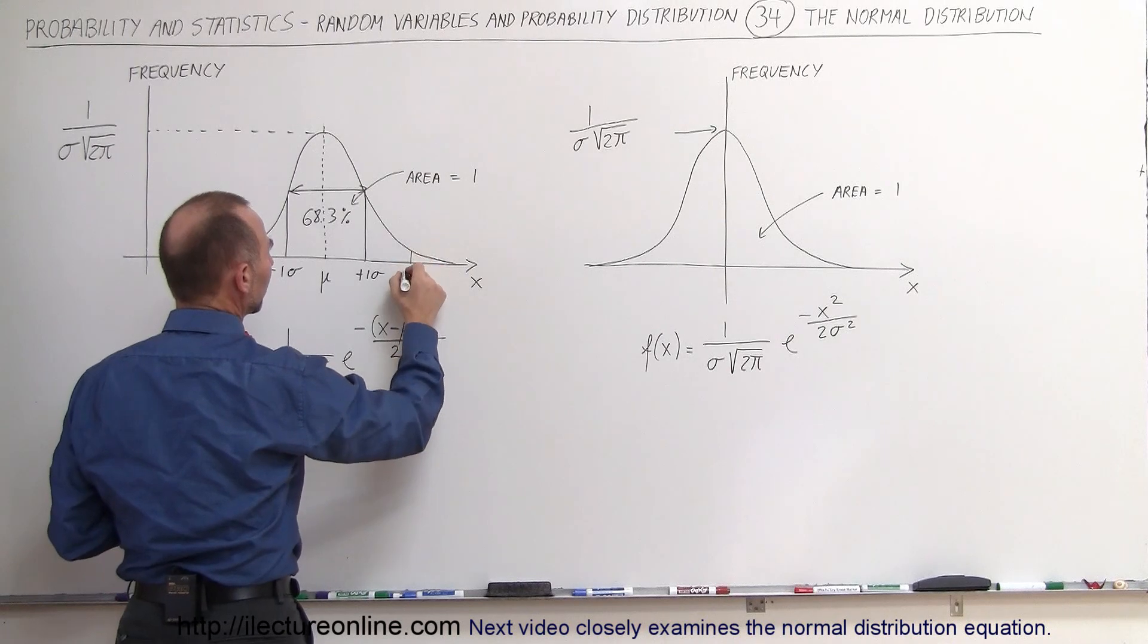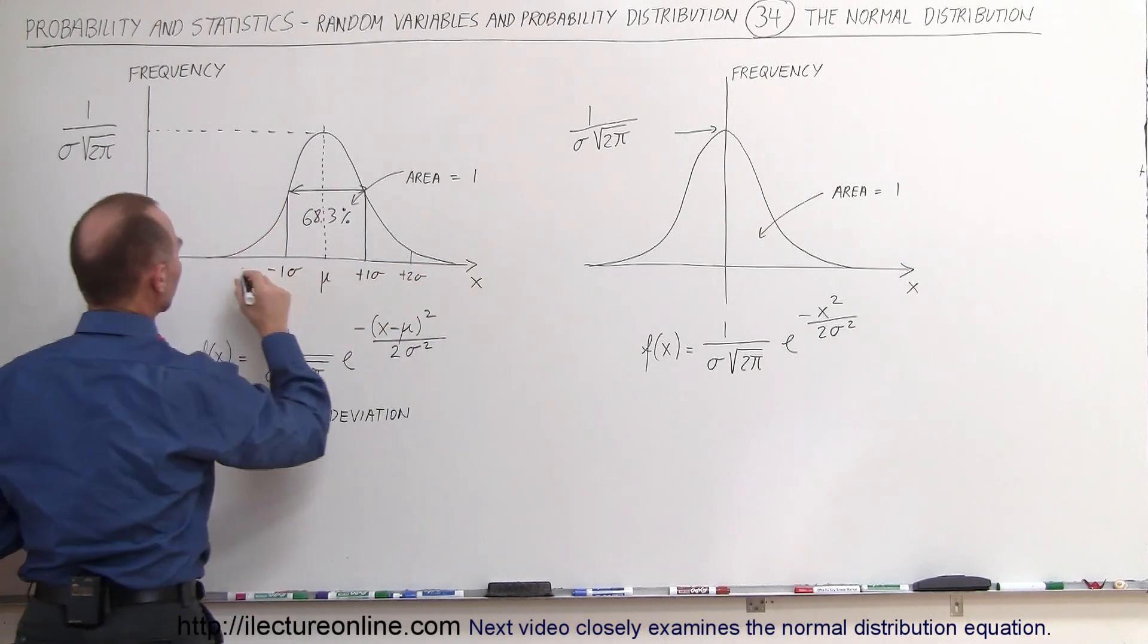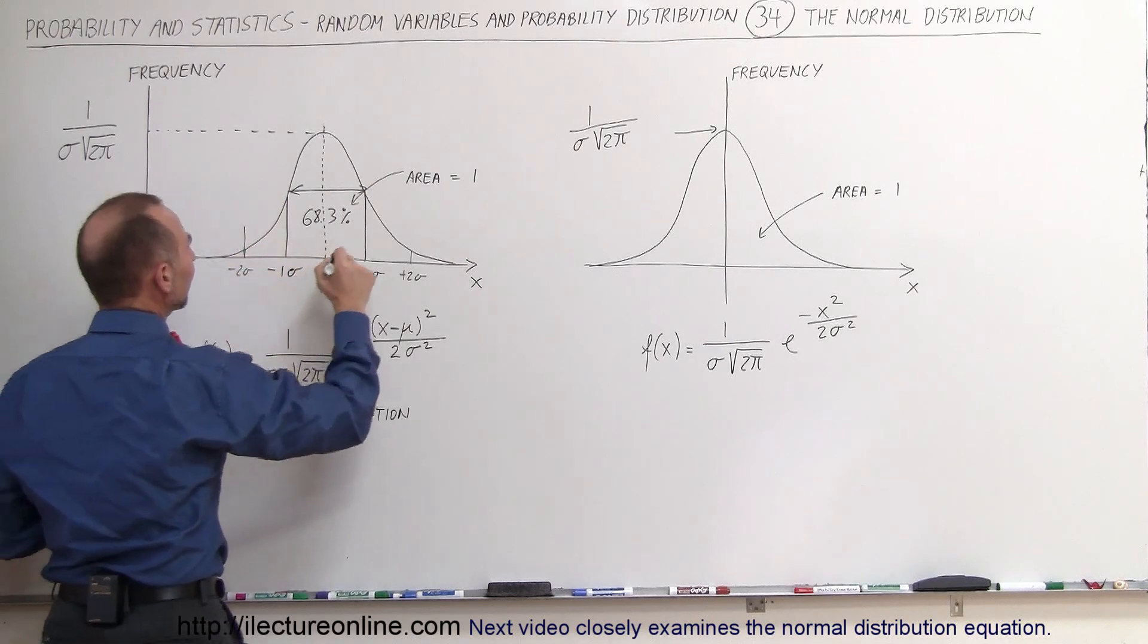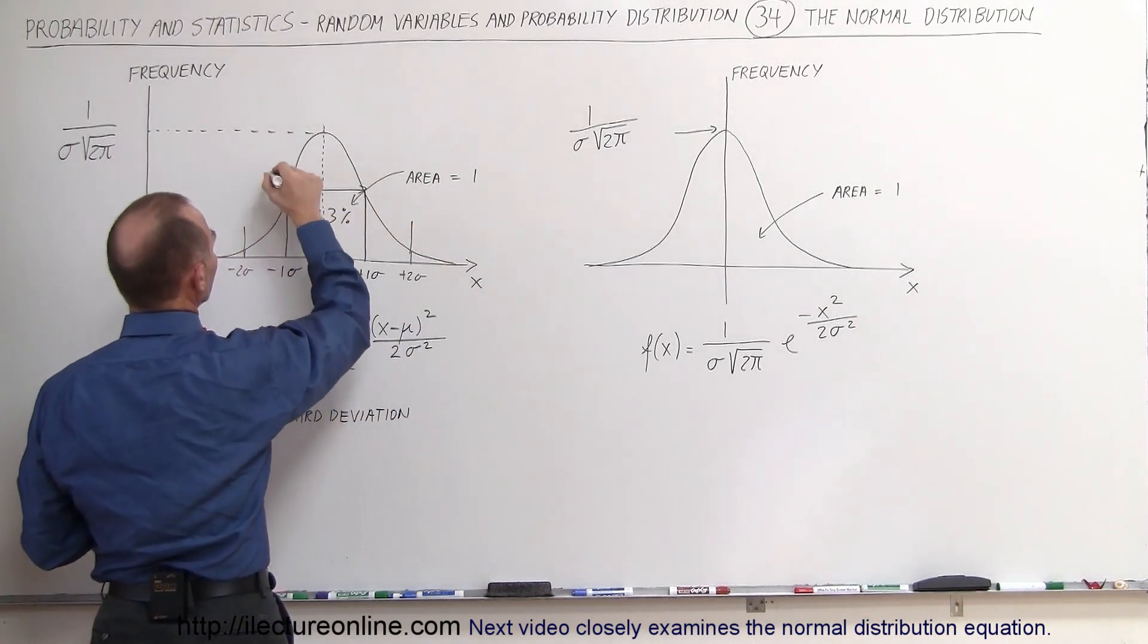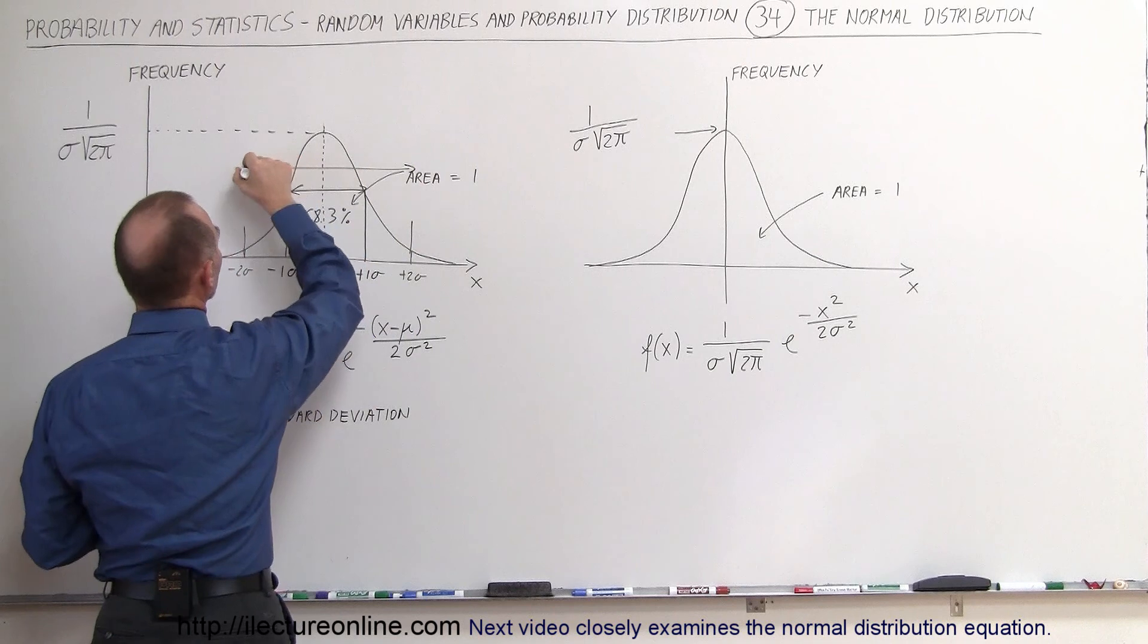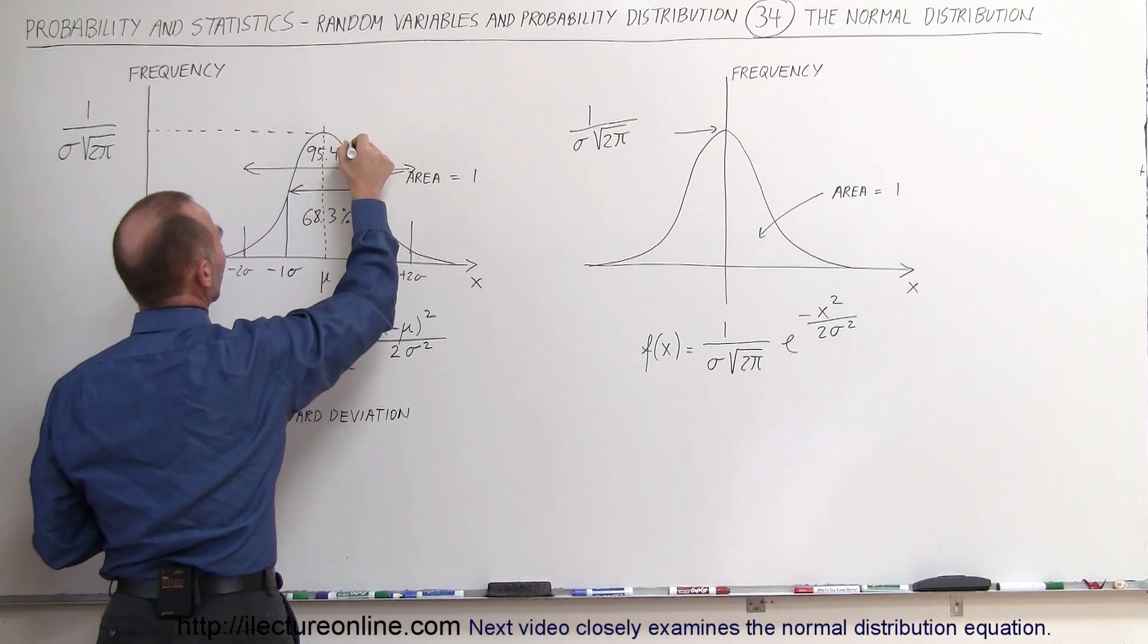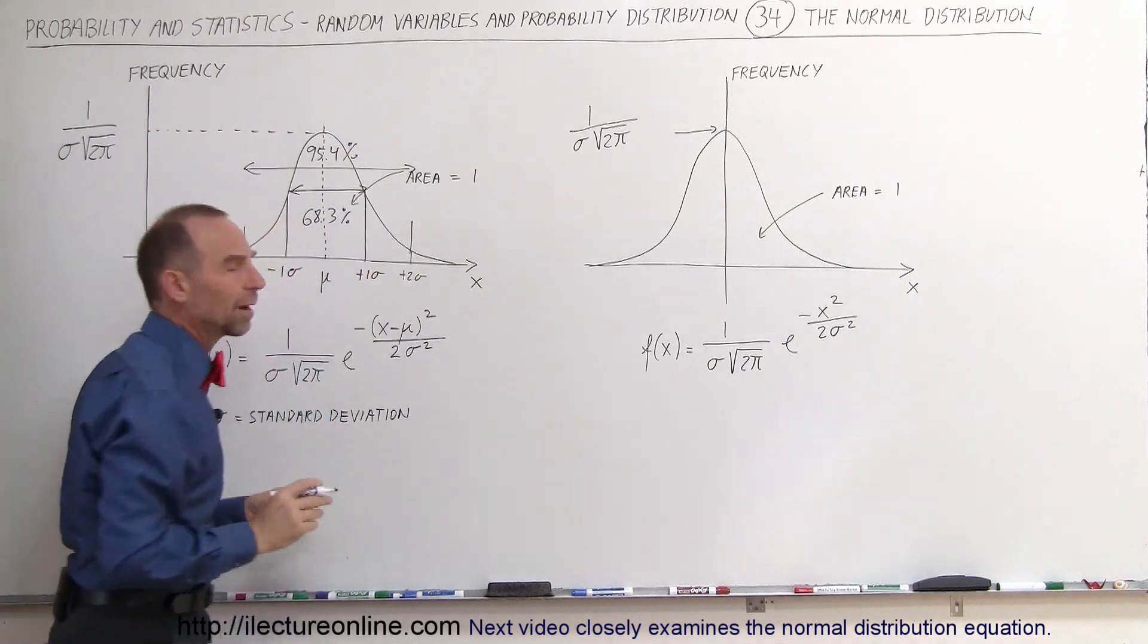If you go plus 2 sigma in either direction, so plus 2 sigma and minus 2 sigma in this direction, then we know that 95.3% of all the values, actually it's more like 95.4% of all the values fall between plus or minus 2 sigma.